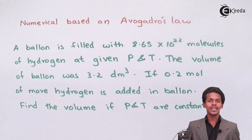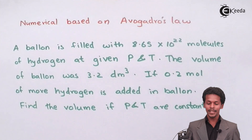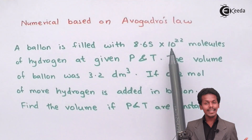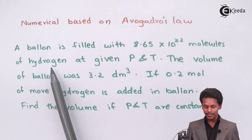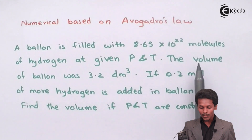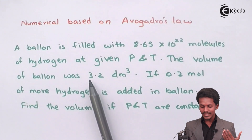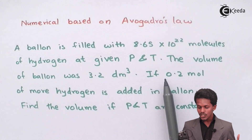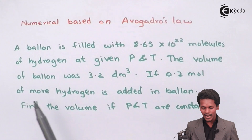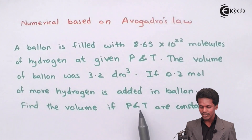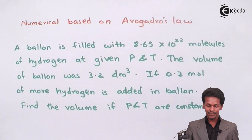This numerical is based on Avogadro's Law as presented on the screen. It says that a balloon is being filled with 8.65 × 10²² molecules of hydrogen at a given pressure and temperature. The volume of the balloon was 3.2 dm³ at that time. If 0.2 moles of more hydrogen is added to the balloon,